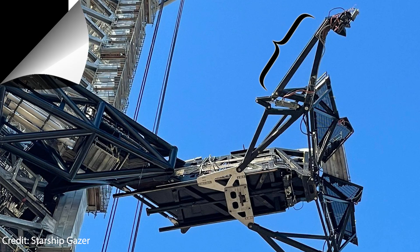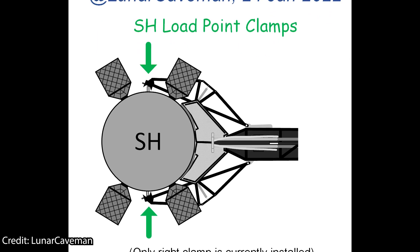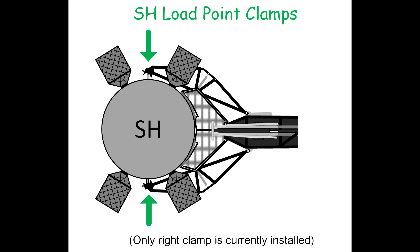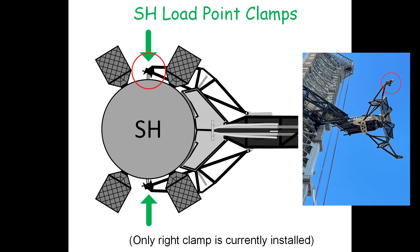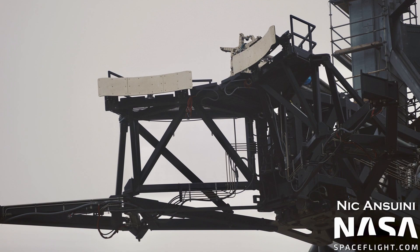Once the claw is deployed, what the grippers do is close toward the sides of the booster. Once this step has been completed, the clamps located at the very end of the claw will attach to the booster, thus completing the process of fixing the QD arm to Super Heavy. Situated at the end of the QD arm platform, we also find a pair of white protective pads that will help guide and hold the ship into place.